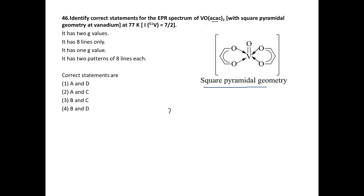The formula is 2nI + 1, where n is the number of atoms. The number of vanadium atoms is only 1, and the spin of vanadium is 7/2. So: 2 × 1 × (7/2) + 1 = 8. We will obtain 8 lines in the spectra — that is certain.